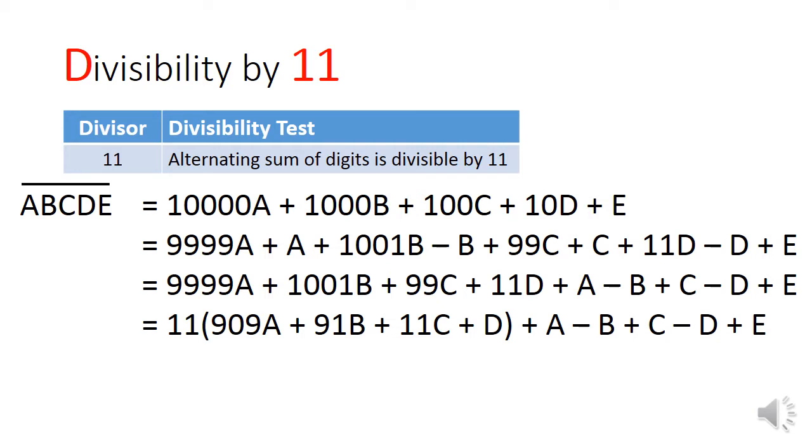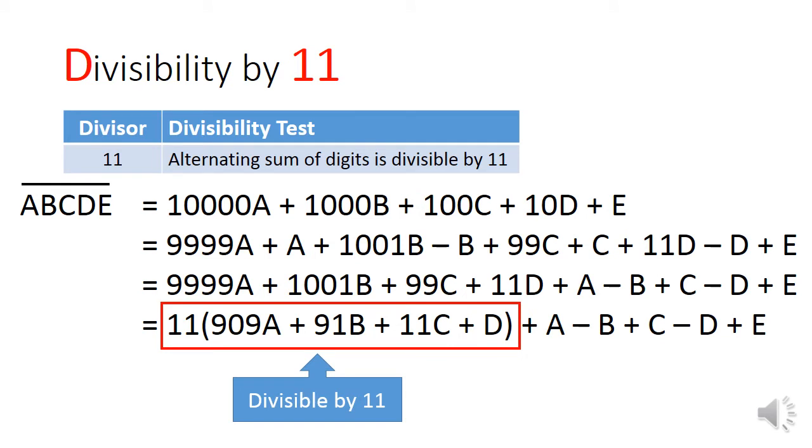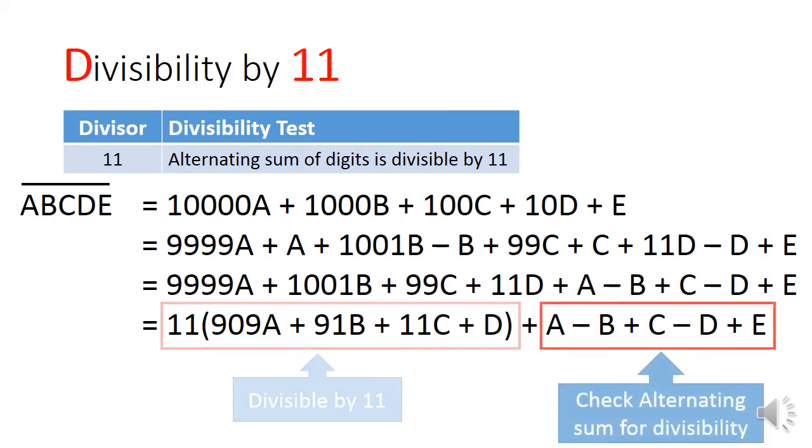The proof is presented here. By taking a 5-digit number such as a, b, c, d, e, and expressing it as 10,000a plus 1,000b plus 100c plus 10d plus e, I can manipulate this algebraic expression into two groups. The first group is 11 times of 909a plus 91b plus 11c plus d. This is clearly divisible by 11. Hence, I only need to check the second group, which is the alternating sum.